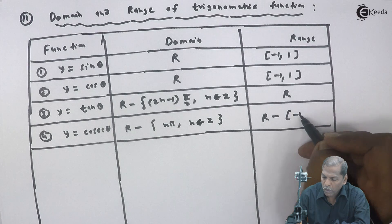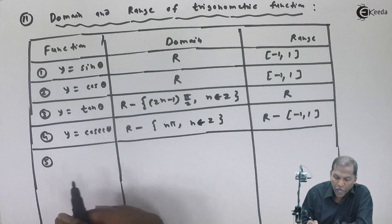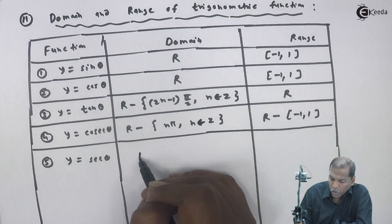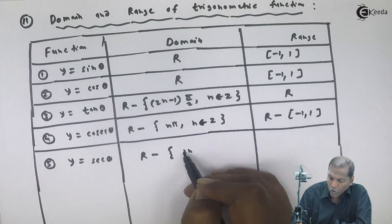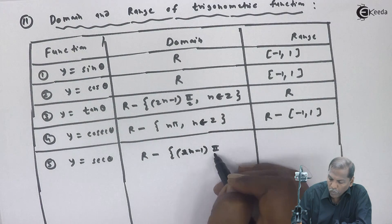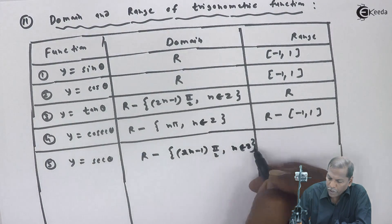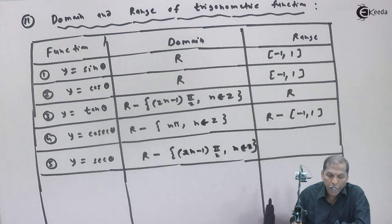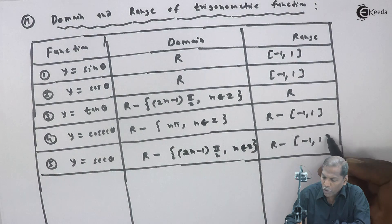The fifth function is y equal to sec theta. The domain is the set of real numbers minus odd multiples of pi by 2, that is {(2n minus 1) pi by 2}, where n belongs to the set of integers. The range is the set of real numbers minus the closed interval minus one comma plus one.